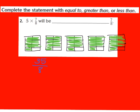I can turn 35/8, the improper fraction, into a mixed number. 8 goes into 35 four whole times, and 8 times 4 is 32, so I have 3 left over. That gives a numerator of 3 with a denominator of 8 — so the product of 5 times 7/8 is 4 and 3/8. And 4 and 3/8 is greater than the fraction 7/8. So 5 times 7/8 is greater than 7/8.